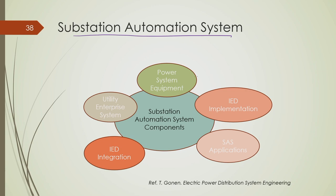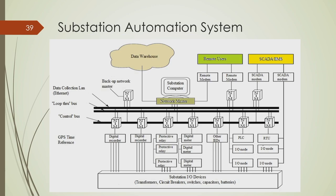A substation automation system schematic includes different power system equipment, IED implementation and integration, and utility enterprise systems. The system connects different users to two control buses, with substation input-output devices including transformers, circuit breakers, switches, capacitors, and batteries, all operated with the help of the SCADA system.